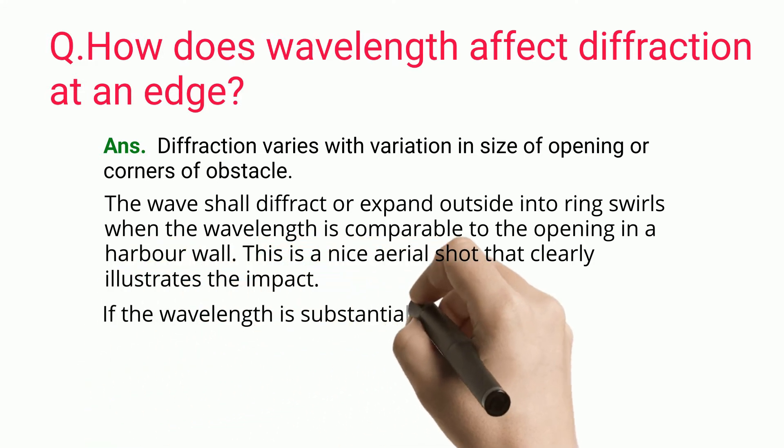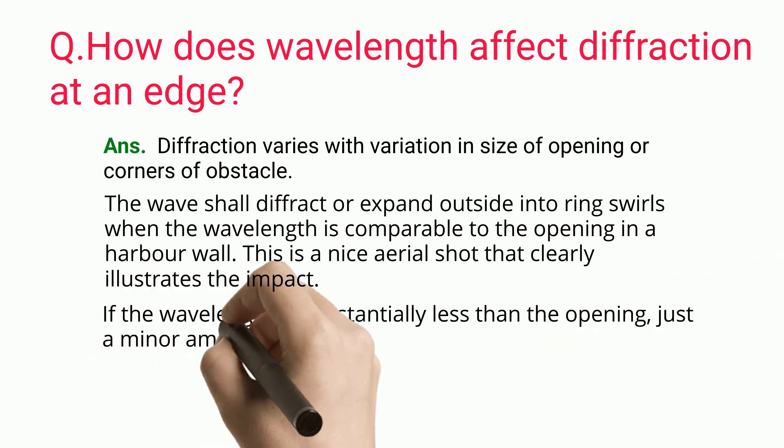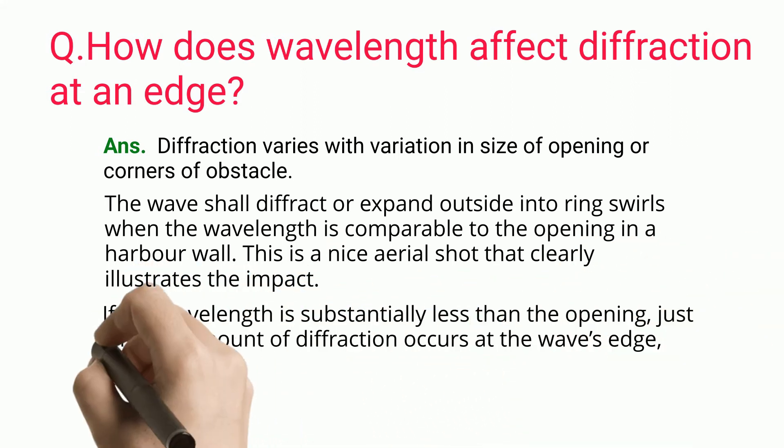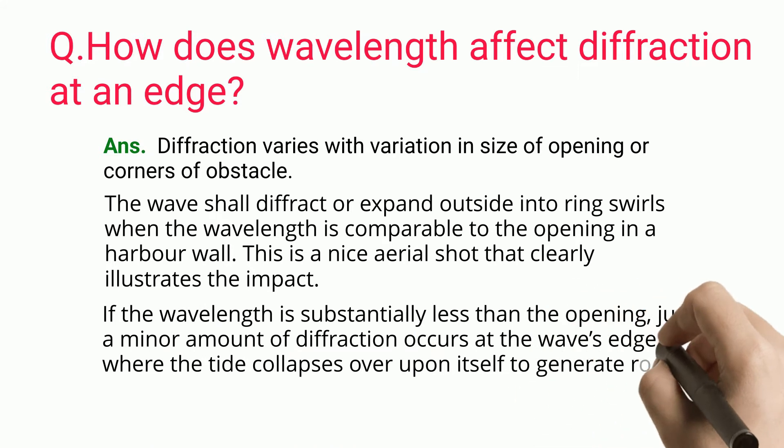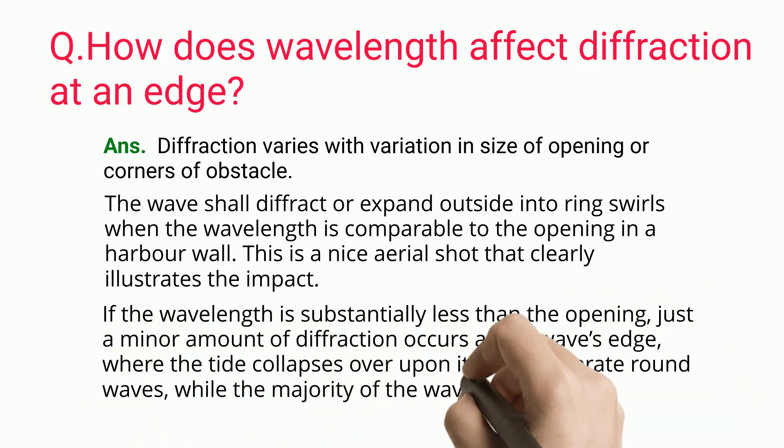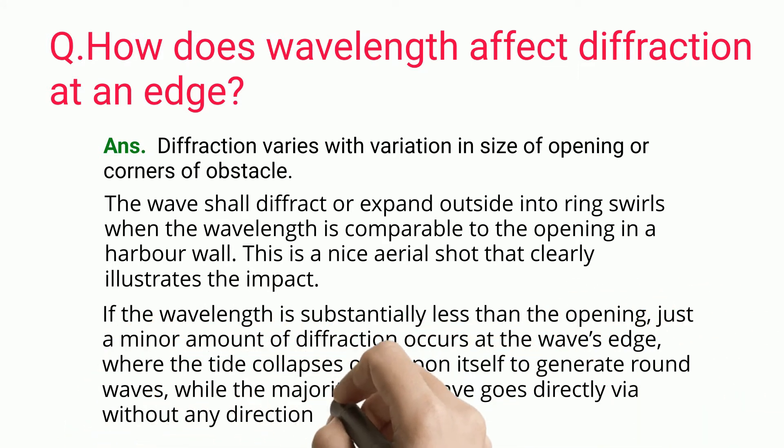If the wavelength is substantially less than the opening, just a minor amount of diffraction occurs at the wave's edge, where the tide collapses over upon itself to generate round waves, while the majority of the wave goes directly via without any direction change.